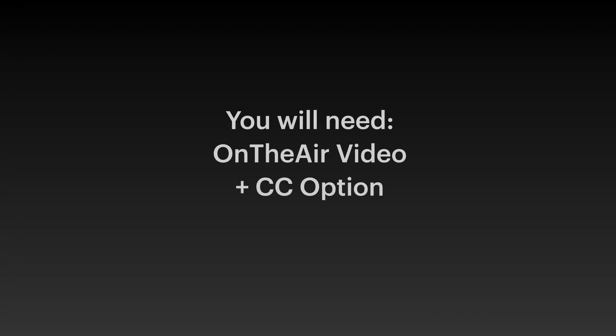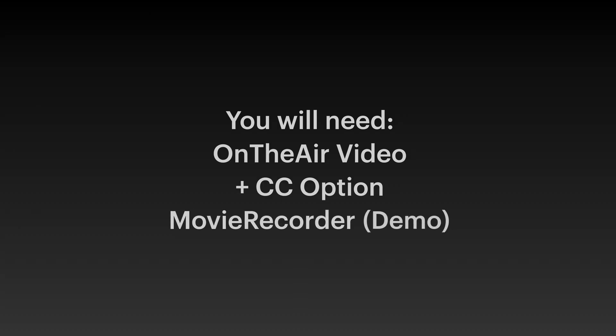Hello, I'm David, and I want to take you through how to send a SCTE message through OnTheAir Video 4. For this, we're going to need OnTheAir Video 4 and then an option license for closed captioning — that allows you to access the bank and send messages. You're also going to want to download Movie Recorder. You don't need a license for this; you can have it in demo mode, and that's going to allow you to see the SCTE message as we test it.